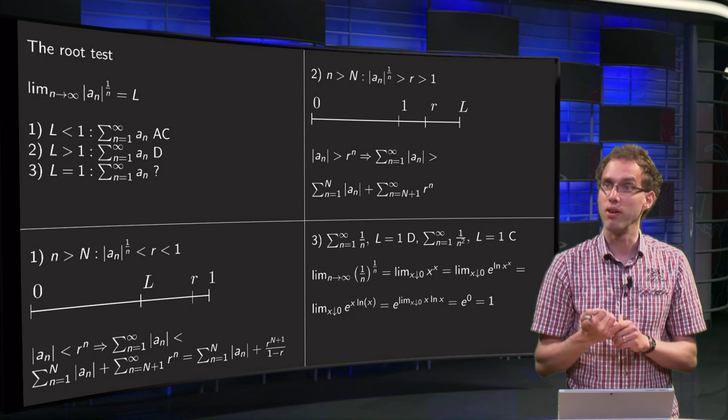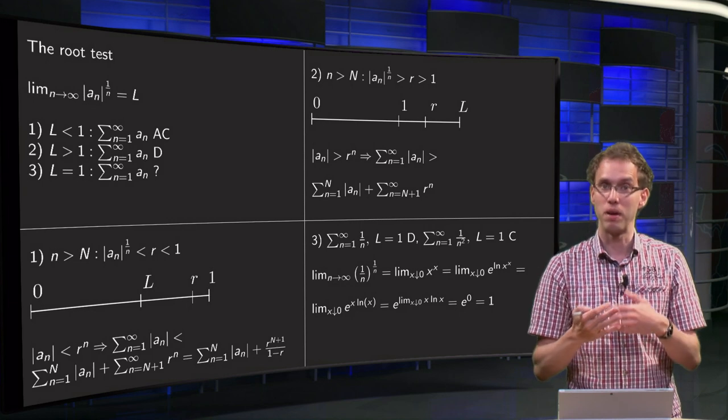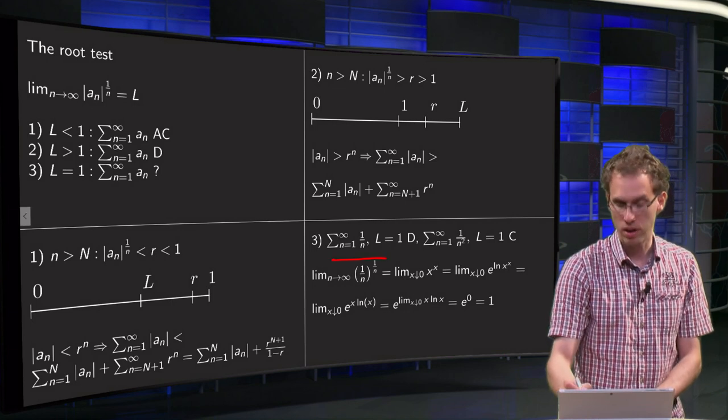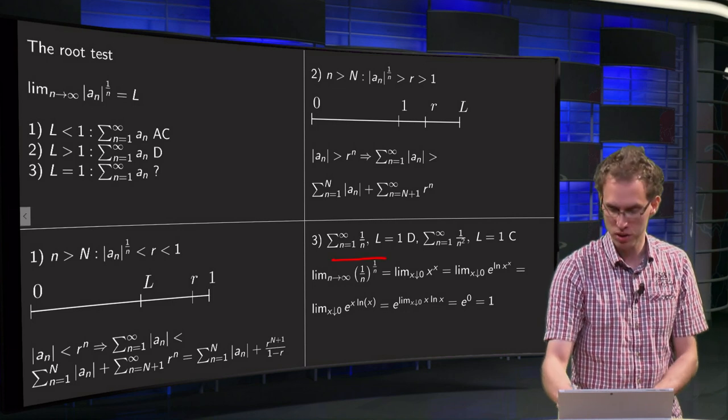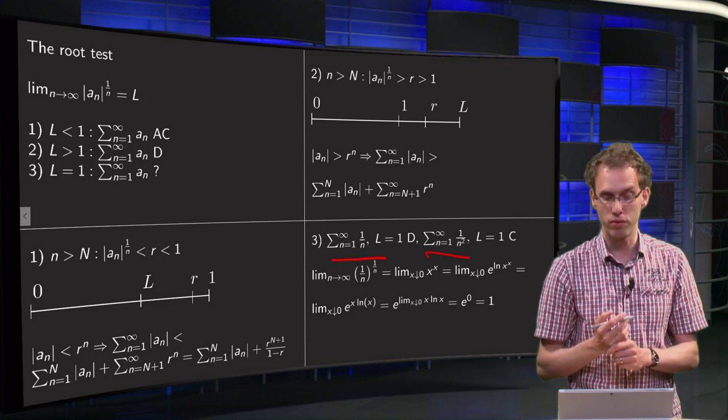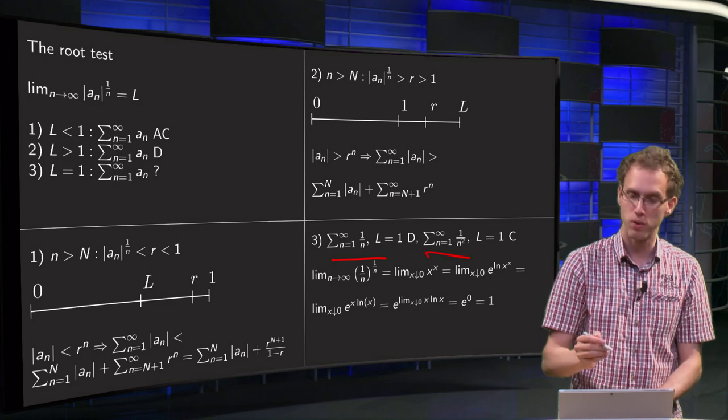And what about L equals 1? Well it can be either convergent or divergent, and you can see that by applying the root test to the harmonic series, which is divergent, and p-series with p equals 2, which is convergent. Let's do just the limit for the first one.